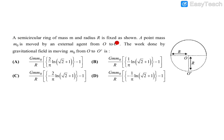This is an advanced problem. A semi-circular ring of mass M and radius R is fixed as shown in the figure. A point mass m0 is moved by an external agent from point O to point O dash. We need to find the work done by the gravitational field in moving m0 from O to O dash. For this we can use the potential energy approach.